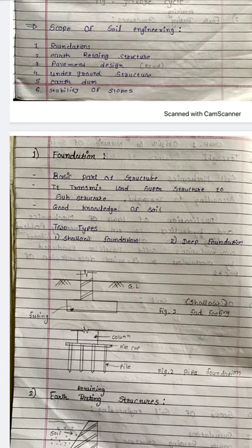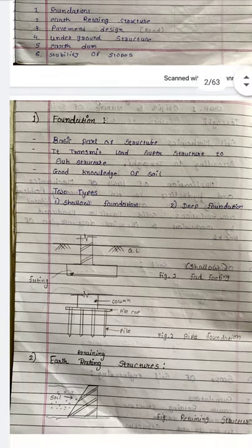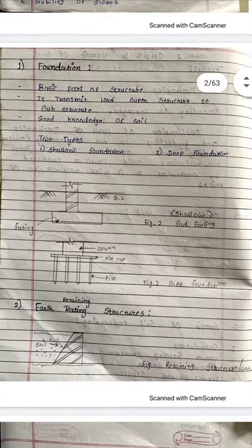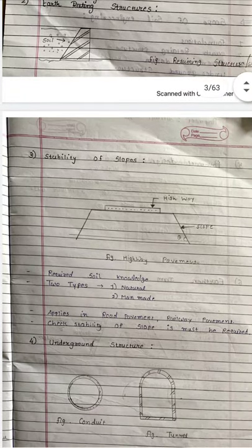Foundations is the first scope. There is a civil engineering structure, there is a load, and you need to know what kind of particular foundation to use — so thorough knowledge is important. Foundation has sub-types: shallow foundation and deep foundation. Next, stability of slopes.